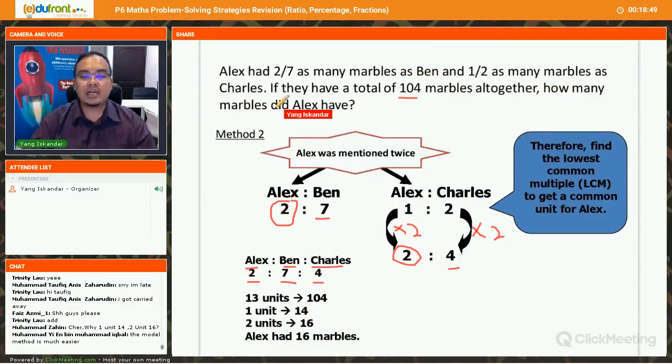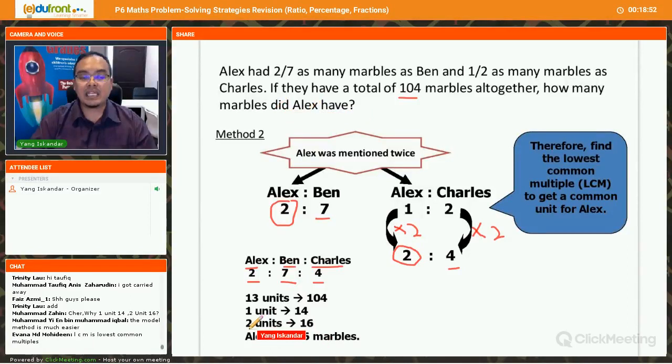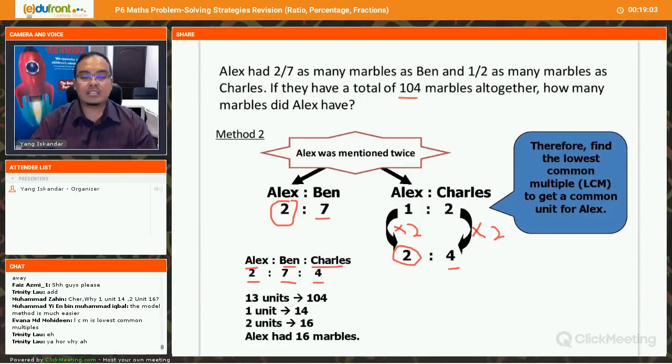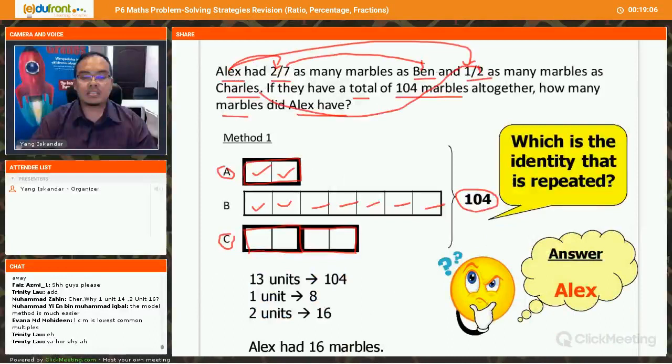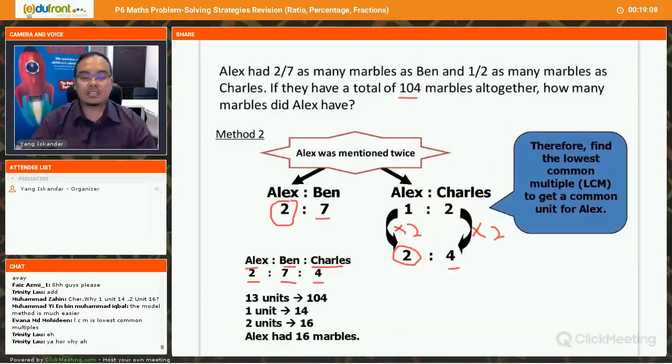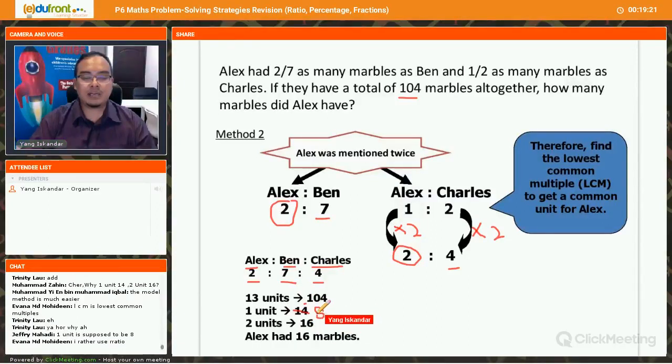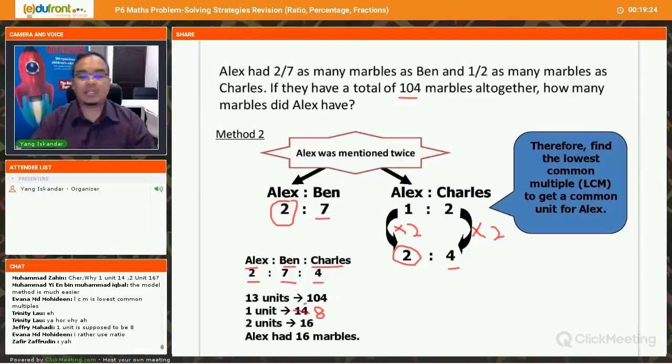So 2 units, why Alex? Alright? Because the question is, how many marbles did Alex have? So Alex has 2 units. So 14 multiply by... Okay? Okay, there should be 8 here. Okay? There's an error here. It should be 8. 1 unit is 8. So 2 units is 16. It is 8. Okay? It's supposed to be 8 here. Okay? Sorry for the typo. Okay. Alright.